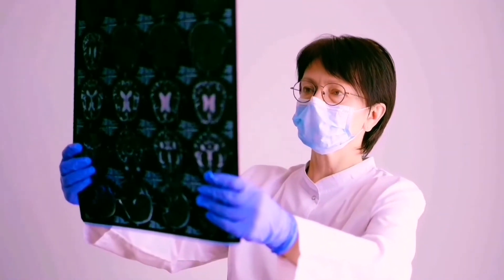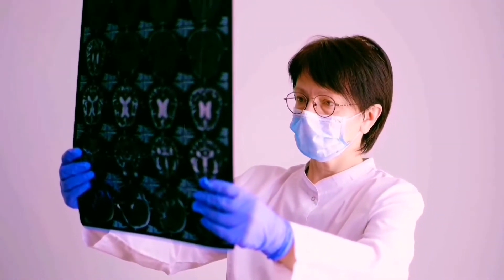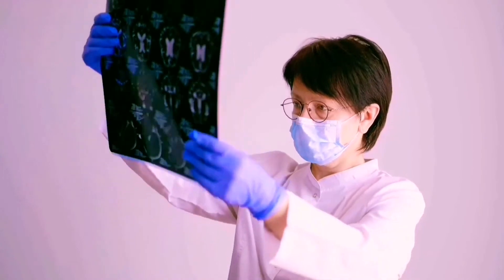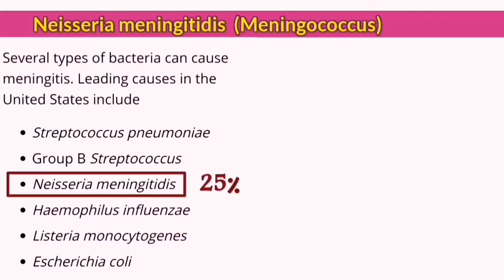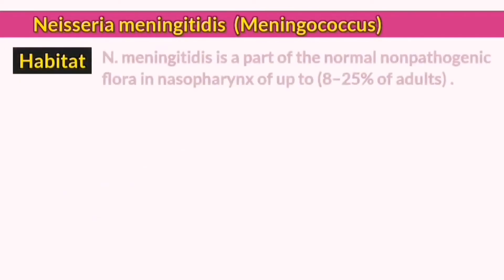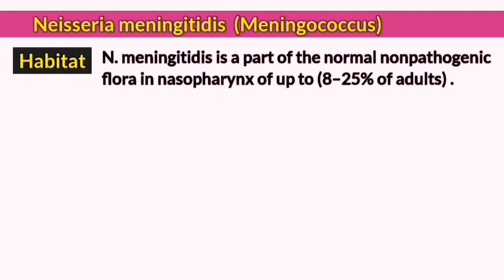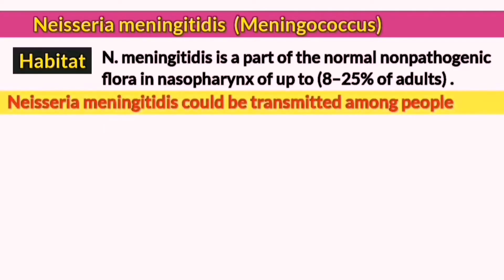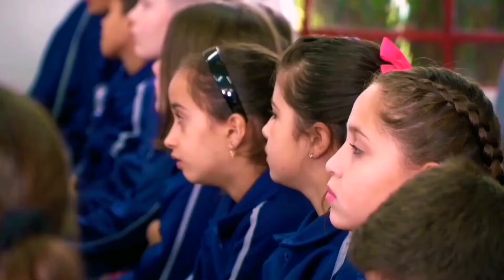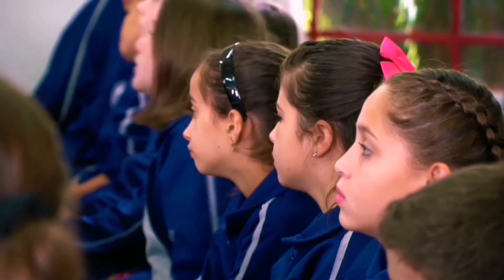Neisseria meningitidis was named due to its specific role in causing meningitis, and it alone accounts for 25% of the total number of meningitis infections. Meningococci represents a normal part of the microbial flora in the nasopharynx and can be transmitted between people, making it a contagious organism especially in crowded places such as schools, universities, or military sites.